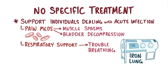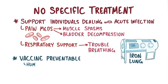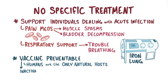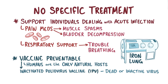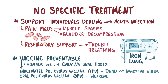Fortunately, it's possible to prevent infection with a vaccine, and humans are the only natural host for the virus. There's inactivated poliovirus vaccine, or IPV, which is where dead or inactive virus is injected into the muscle, and then there's oral poliovirus vaccine, or OPV, which is a weakened strain of the live virus.